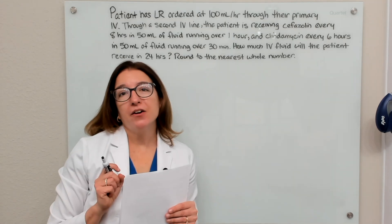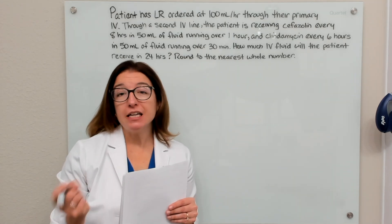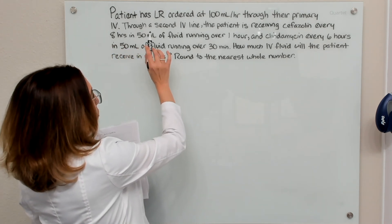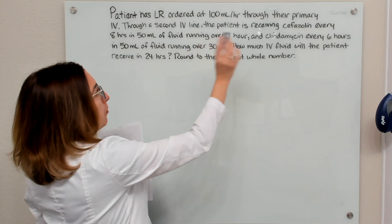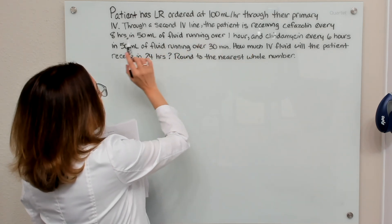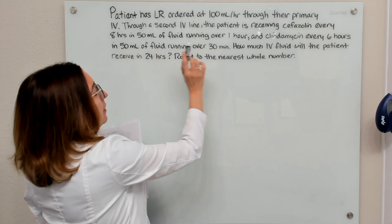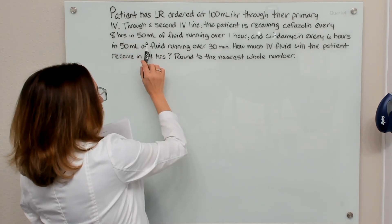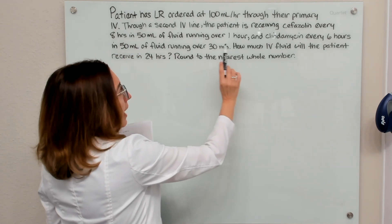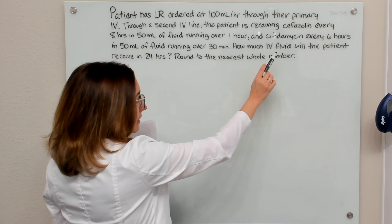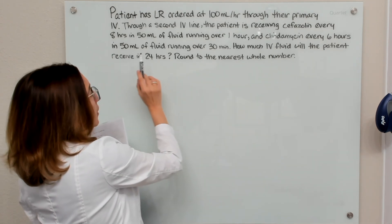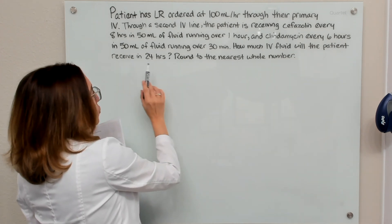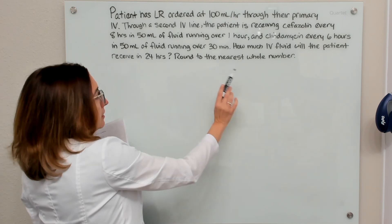Let's work through another IV fluid and medication intake problem. In this problem, our patient has lactated ringers ordered at 100 milliliters per hour through their primary line. Through a secondary IV line, the patient is receiving cefazolin every eight hours in 50 mLs of fluid running over an hour, and also getting clindamycin every six hours in 50 mLs of fluid running over 30 minutes. How much IV fluid will the patient receive in 24 hours? Round to the nearest whole number.